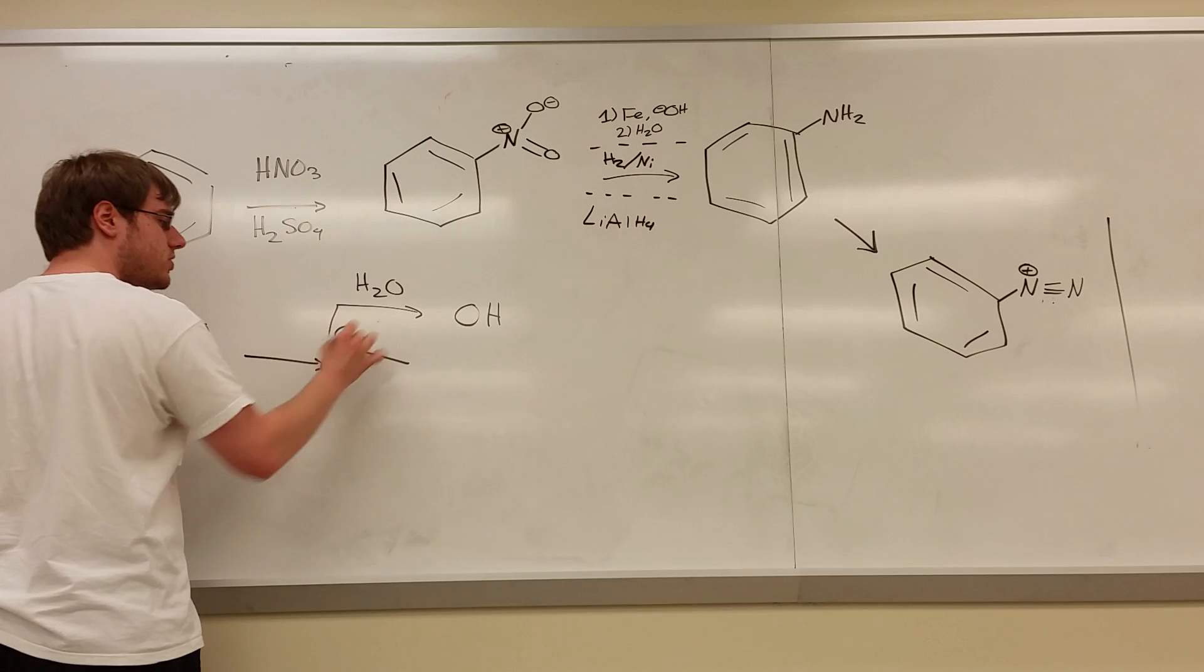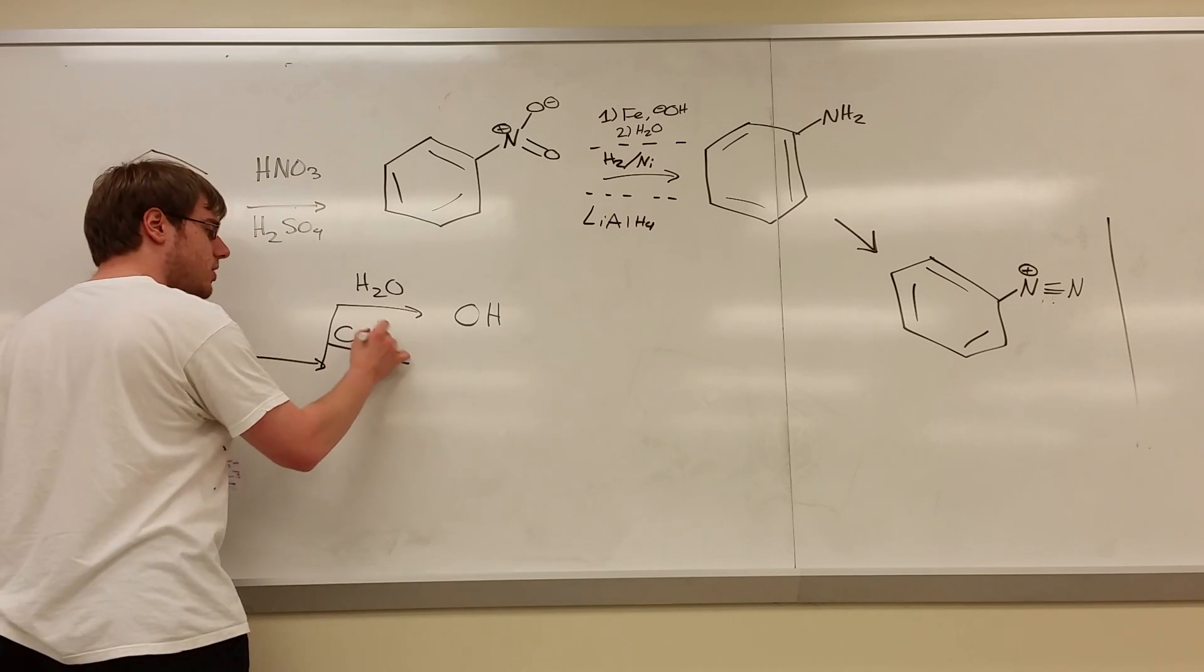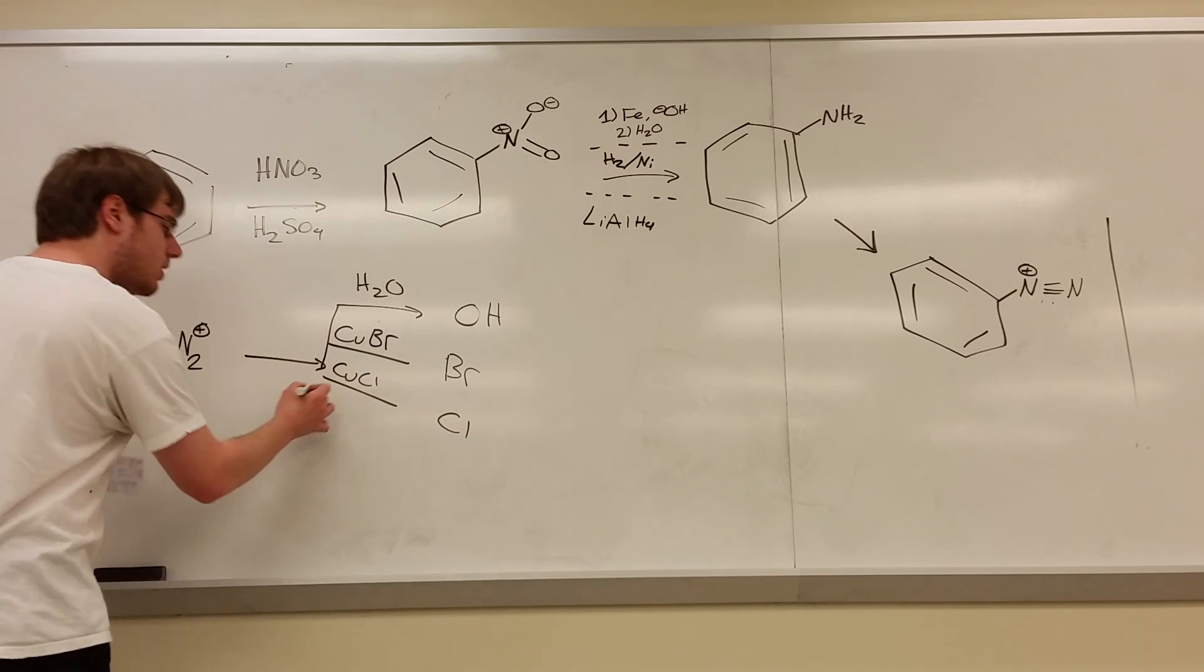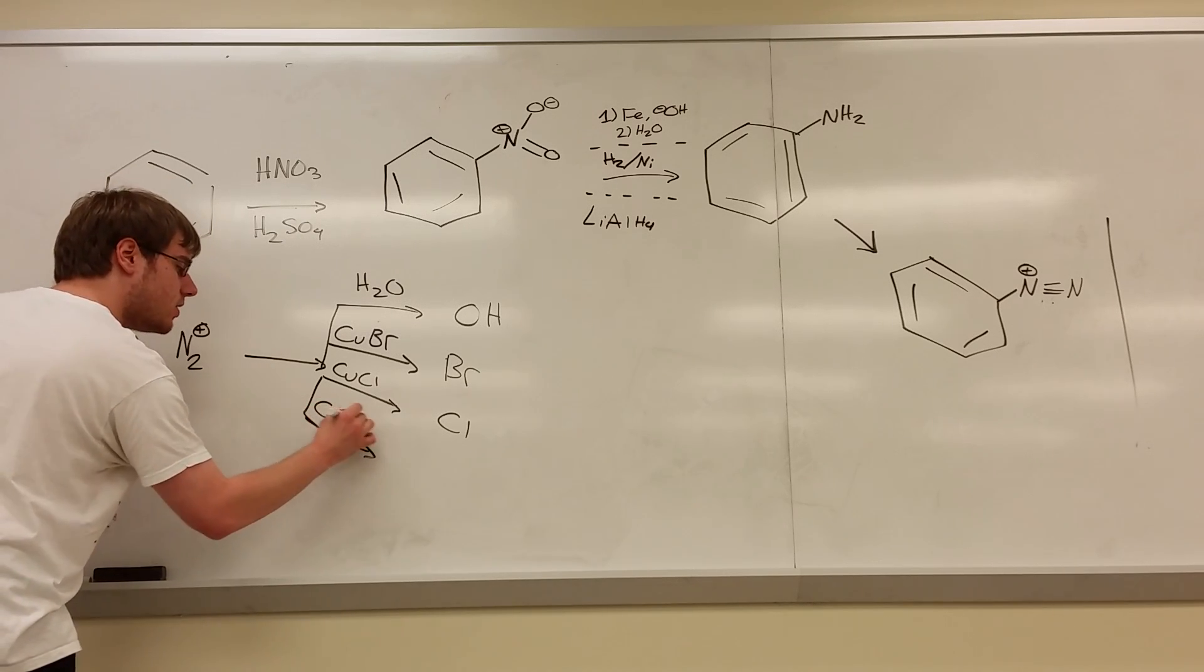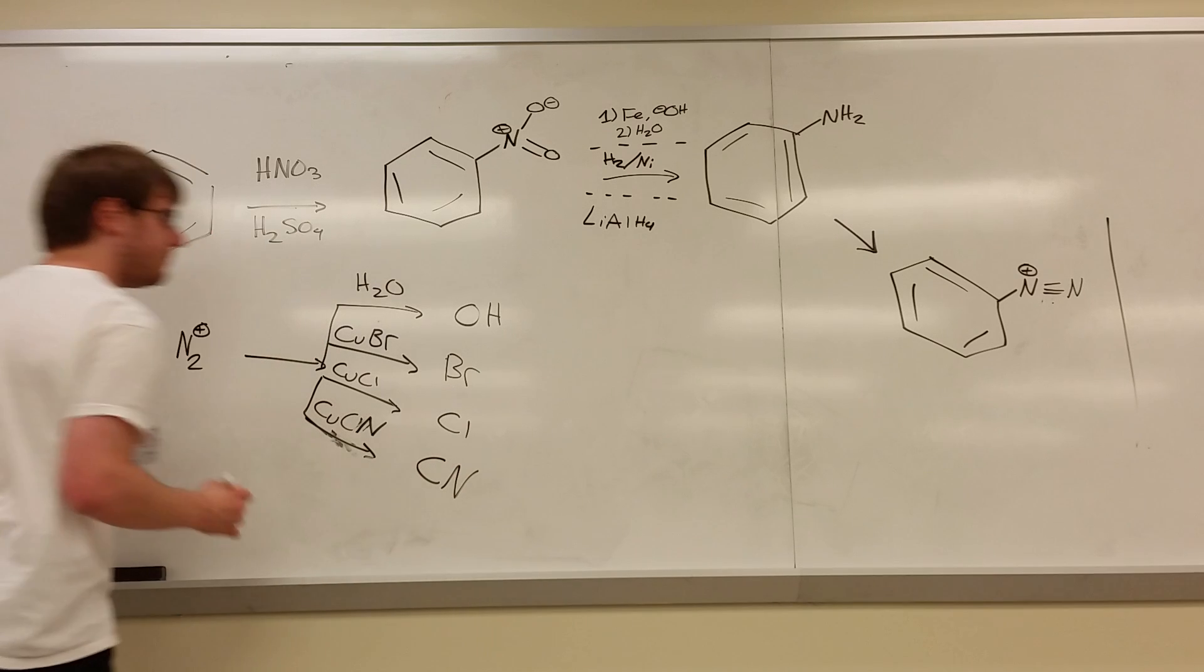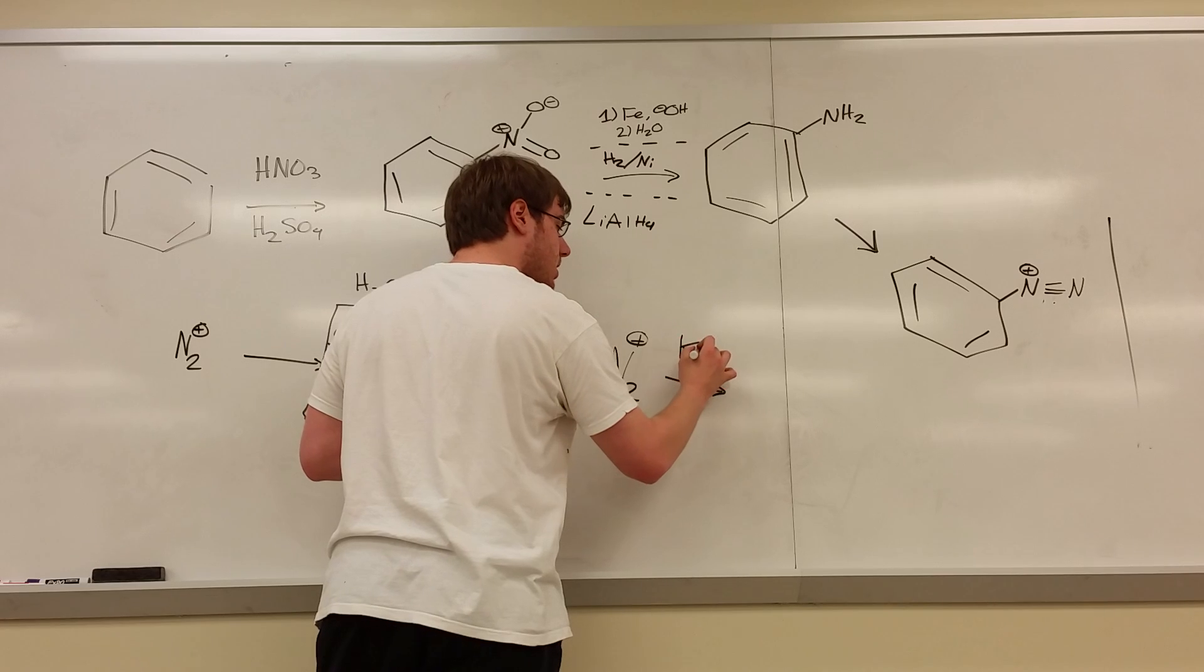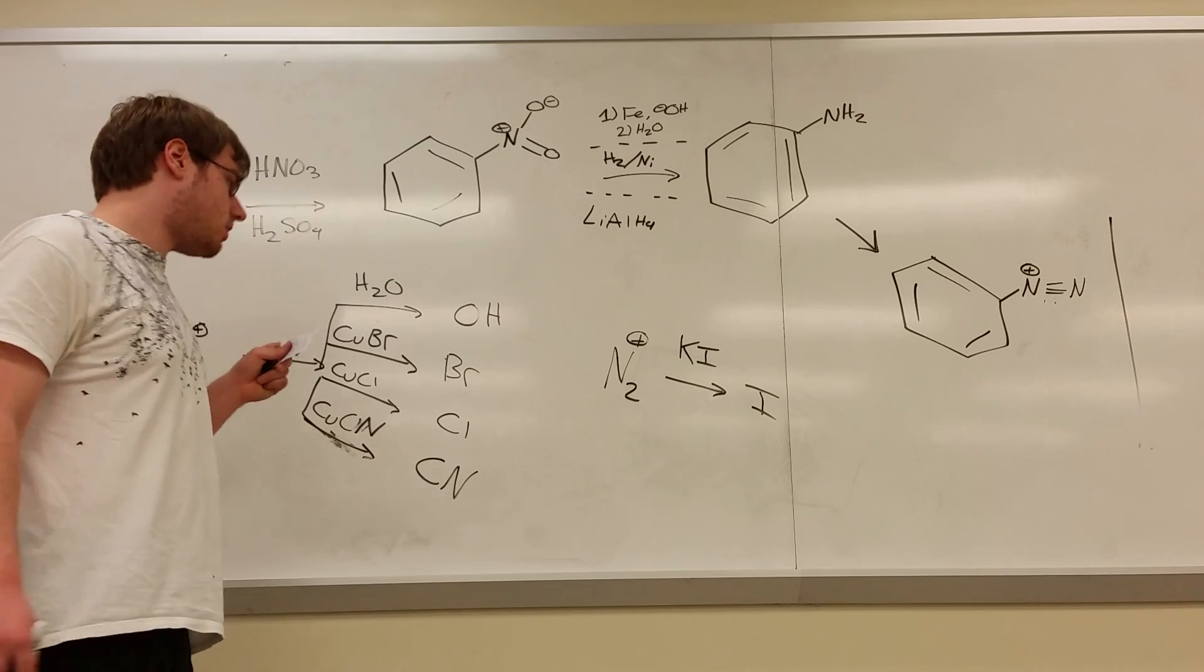One reaction could be H2O over the arrow, and that will replace the N2 positive with an OH. If you see copper, CU attached to something, whatever that copper is attached to will replace that N2. So for example, CuBr will replace the N2 with bromine. CuCl will replace it with chlorine. Then we have also CuCN, and if you couldn't guess, that N2 will be replaced by C triple bond N. I'm running out of space so I'm going to draw more over here. More things that we can turn N2 positive into.